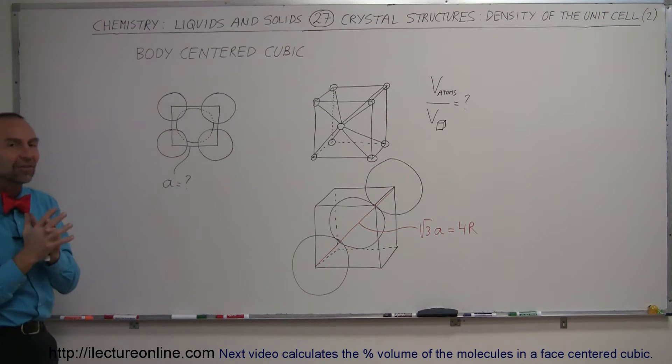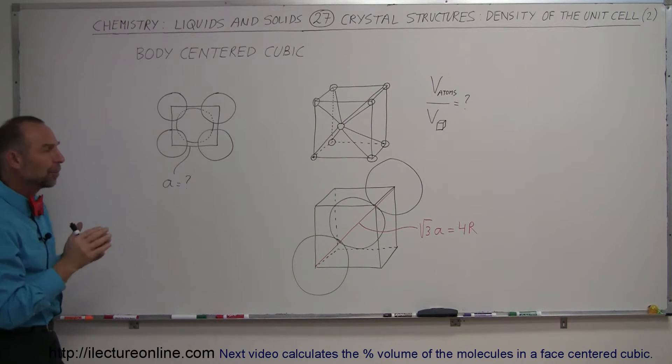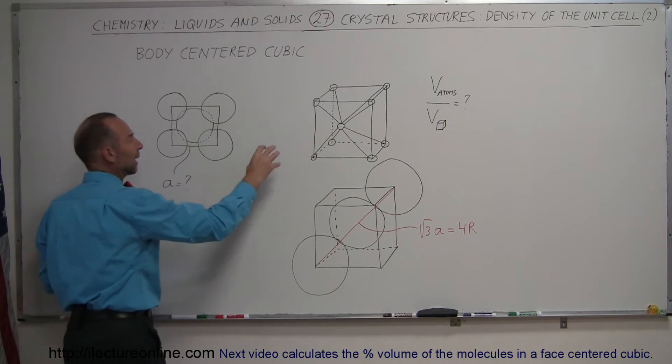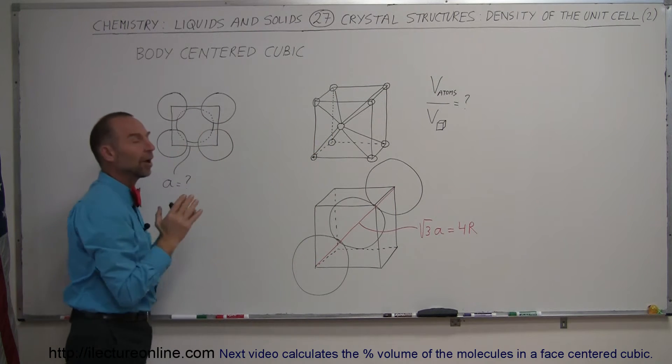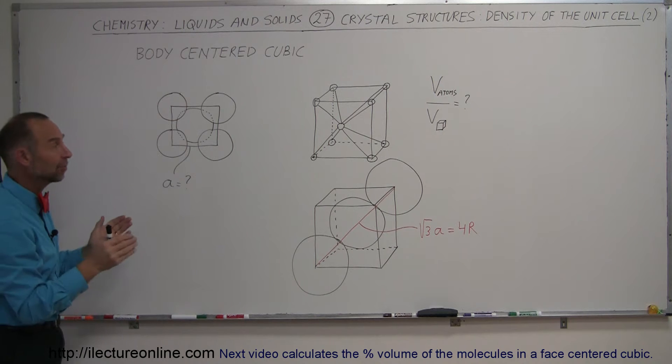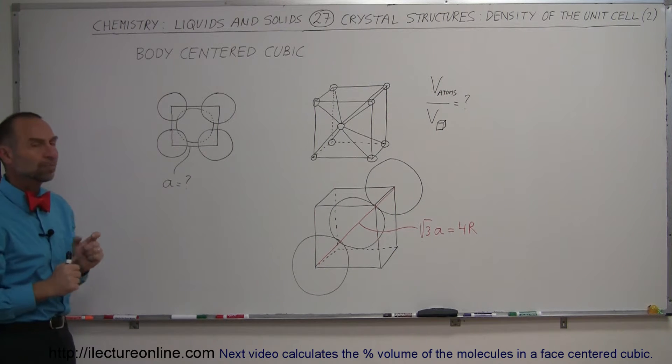So how do we find the density of this kind of packing? Remember the density when we only had atoms at the corner in the previous video, when those were all touching each other, the volume was 52% for the atoms inside the cube? Let's find out what the density is for this particular cube.